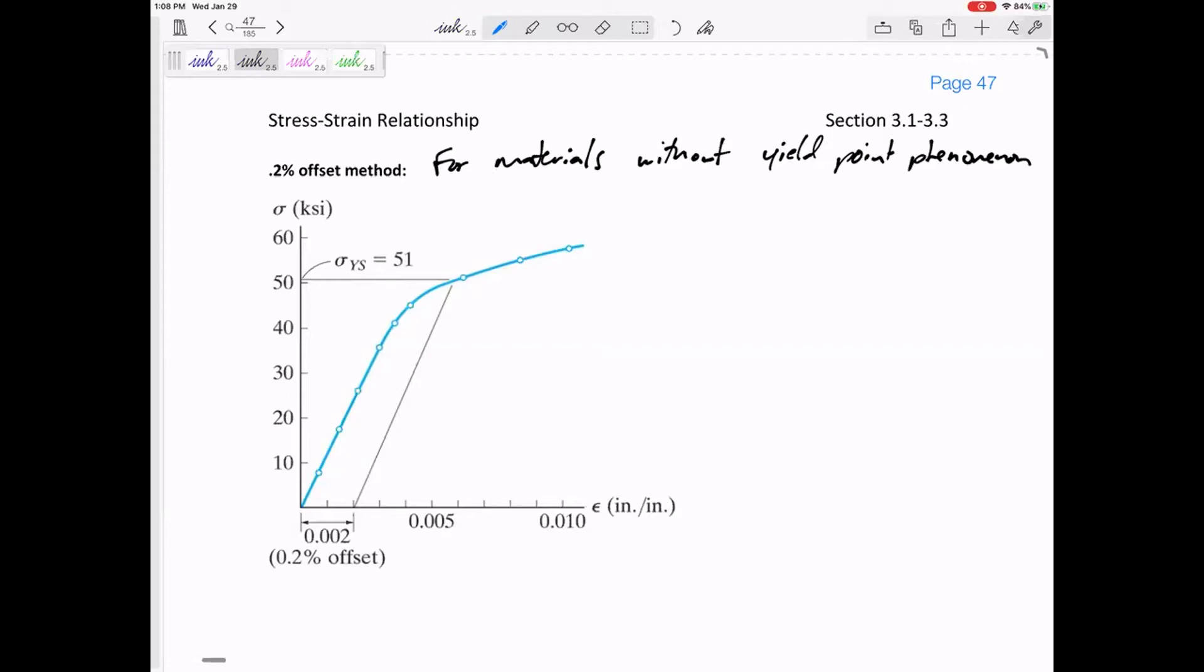So if they – without a sharp yield point, then to calculate the yield point or the yield stress, we will use the 2% offset method.